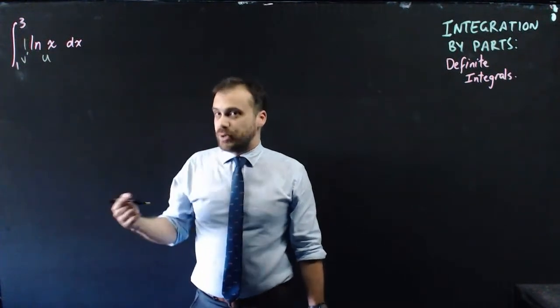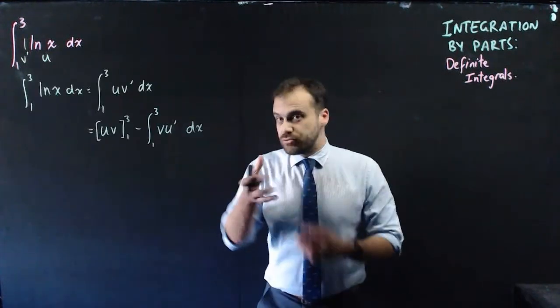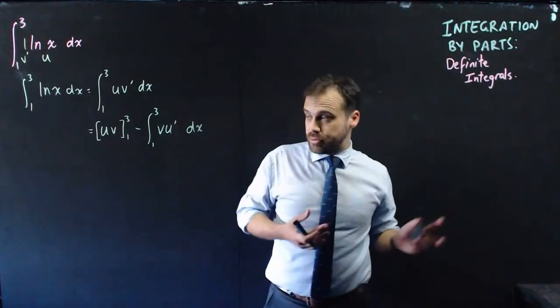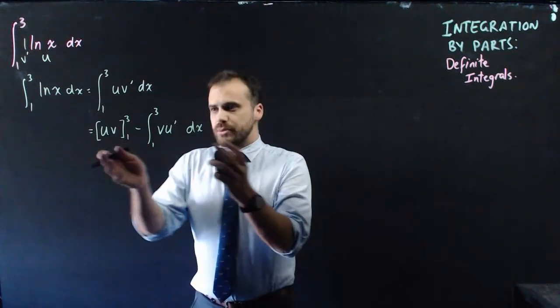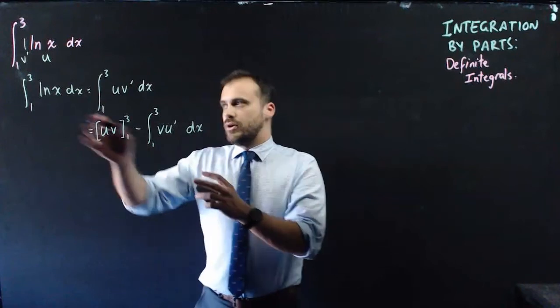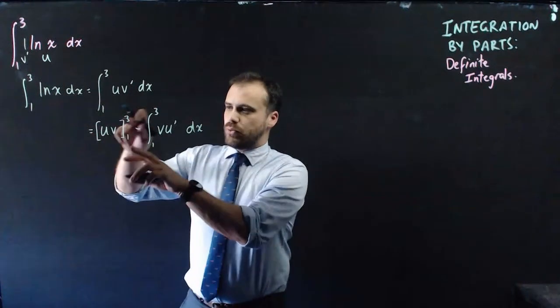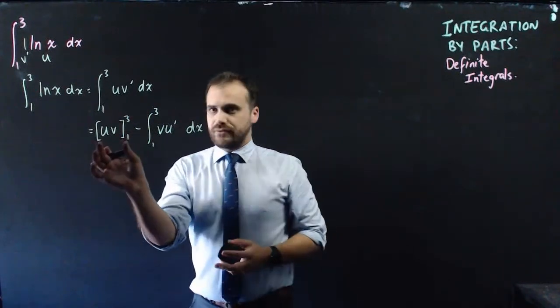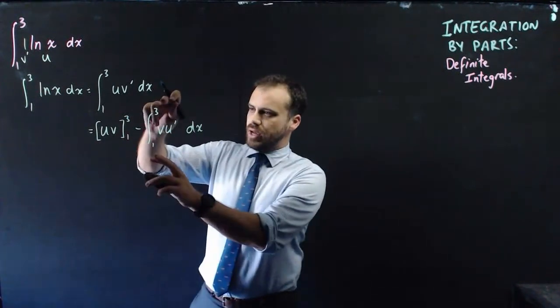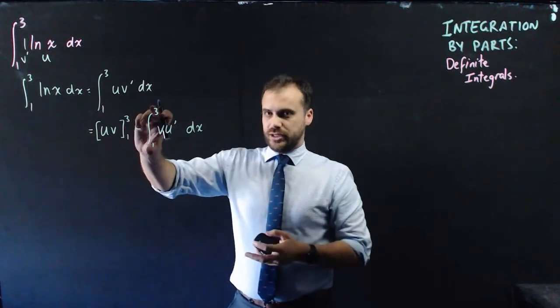Which means that I can now put that into my integration by parts. Now this is really the important part of the video so it's going to be a really short one. Notice my integration by parts formula here when it comes to a definite integral. I'm allowed to put that 3 and that 1 in two places. That 3 and that 1 around that function there and that 3 and that 1 around that function there.